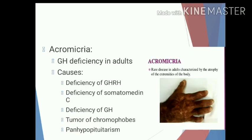Acromicria refers to growth hormone deficiency in adults, resulting in atrophy of the extremities of the body. Causes include deficiency of growth hormone releasing hormone, deficiency of somatomedin C, deficiency of growth hormone itself, tumour of the chromophobes, and panhypopituitarism.